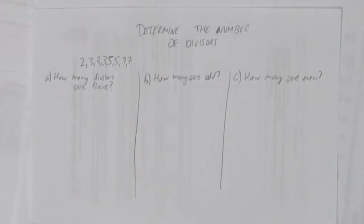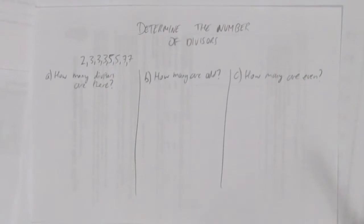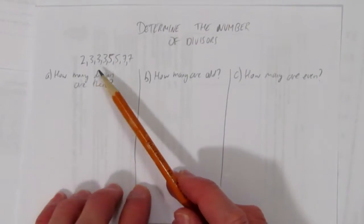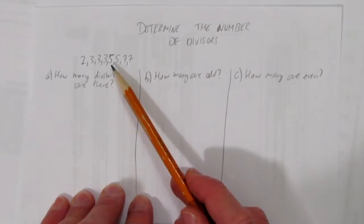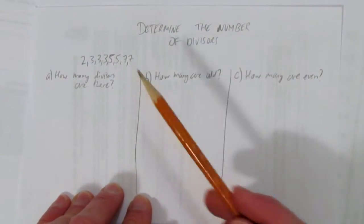In this video, we'll look at how to determine the number of divisors. So suppose you're given the divisors 2, 3, 3, 3, 5, 5, 7, and 7.